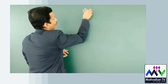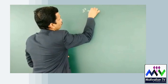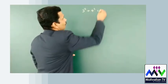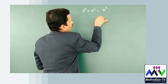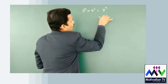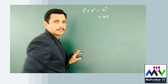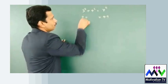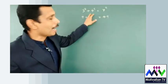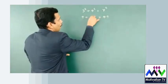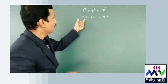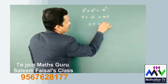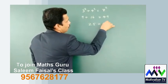3 squared plus 4 squared — students say 3 plus 4 is 7, and 7 squared means 49. But 3 squared means 9, and 4 squared means 16. So 9 plus 16 equals 25, not 49.